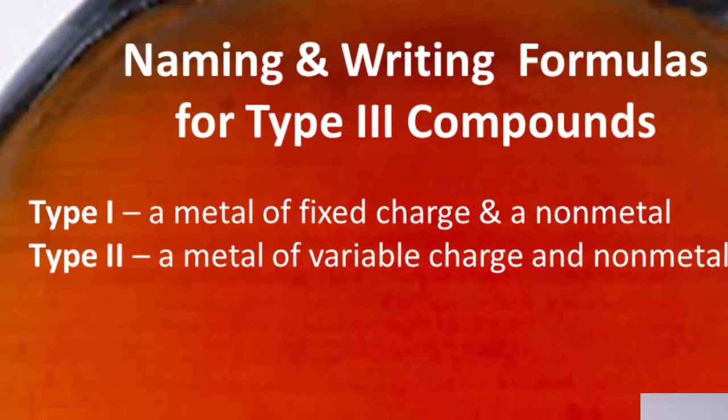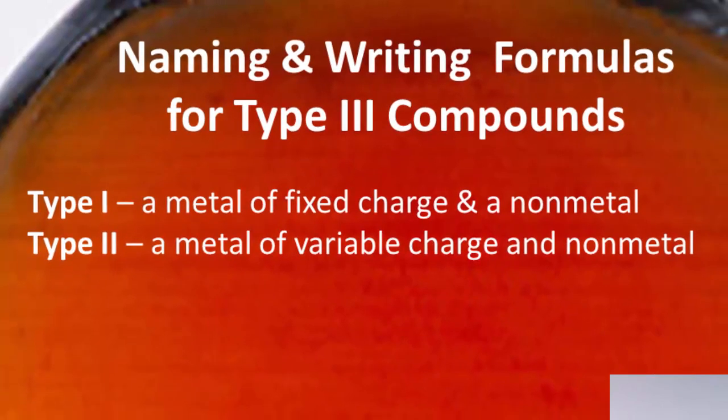Type 2 compounds are when you have a metal of a variable charge. An example of that is iron. Iron can either be positive 2 or positive 3. To indicate that, we use a Roman numeral. So those metals that have multiple charges, anytime they're in a compound, they're a type 2 compound.